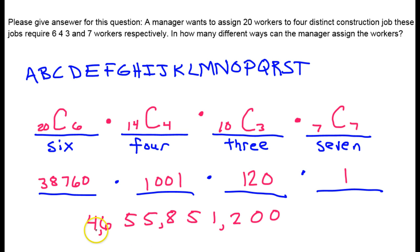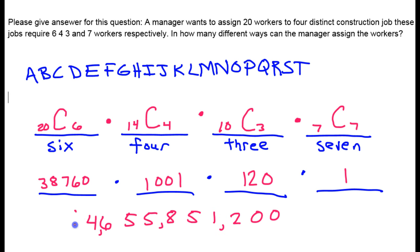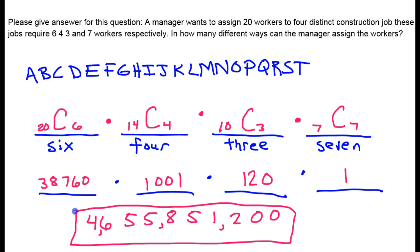So the total number of ways the manager can assign the workers is 4,655,851,200. That's how many ways you could do this. That is what I think — I could be wrong, but that's my best guess.